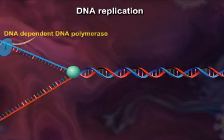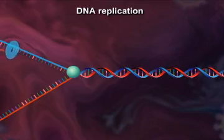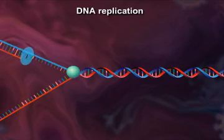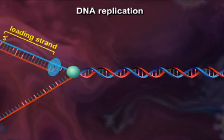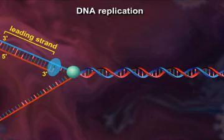DNA-dependent DNA polymerase can only add nucleotides to a free 3' end of a growing chain. Synthesis of one strand of DNA, called the leading strand, proceeds in the 5' to 3' direction. This replication is continuous.